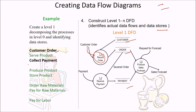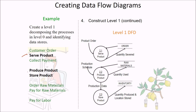Customer order will go to record order 1.1. Payment will go to receive payment 1.2, and produce sales forecast 1.3. This is level 1 DFD for customer order and collect payment. The second group is serve product, produce product, and store product. This is level 1 DFD with raw materials inventory. Process 2.1 for serve product — product order goes here. 2.2 for produce product — production schedule. Store product handles production data and interacts with inventory for quantity produced and location stored. This is level 1 DFD for serve product, produce product, and store product.